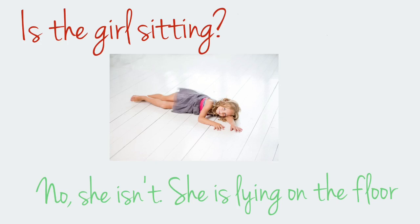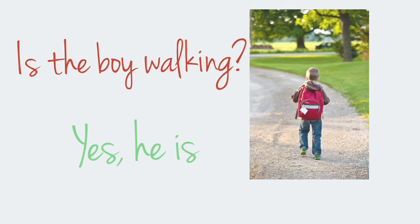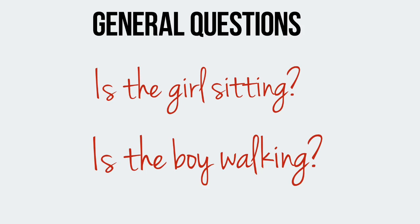Is the girl sitting? No, she isn't. She is lying on the floor. Is the boy walking? Yes, he is. So these are general questions in present continuous. General questions are those which we need to answer with the words yes or no. Repeat after me: Is the girl sitting? Is the boy walking?